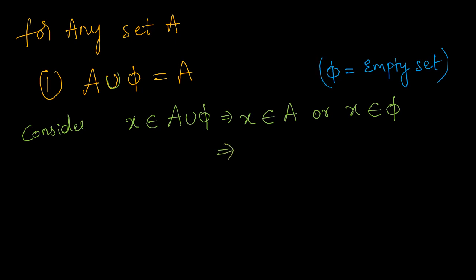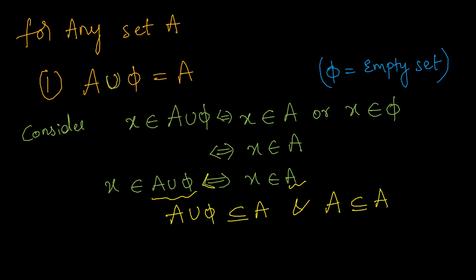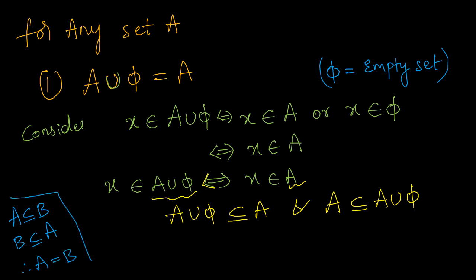Since φ is the null set or empty set, it does not contain any element, so x must belong to set A. These are if-and-only-if statements, so we get: x belongs to A union φ if and only if x belongs to A. From this, A union φ is a subset of A, and also A is a subset of A union φ. Since each is a subset of the other, we conclude A union φ equals A.